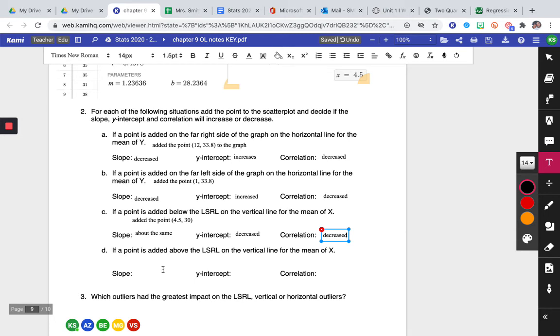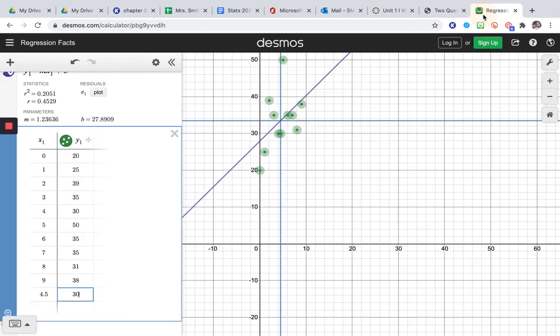So question D says if a point is added above the regression line on the vertical line for the mean of X. So if 30 was below it, let's just bump that up and added the point 4.5 comma, and let's just say 45 and see what happens to my three items. So I'll come back to the table, change that to 45, and now let's compare.